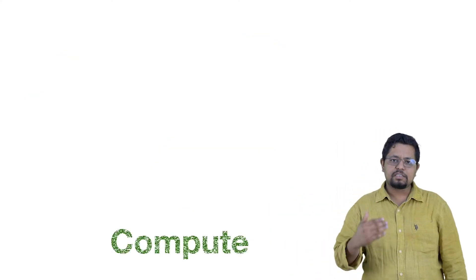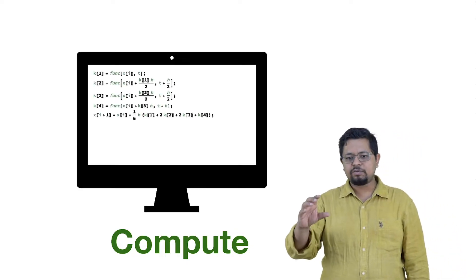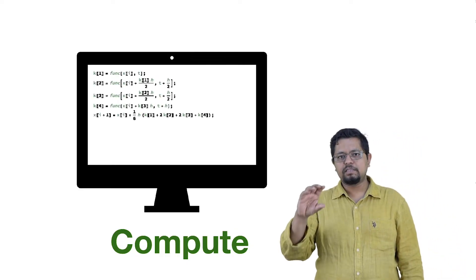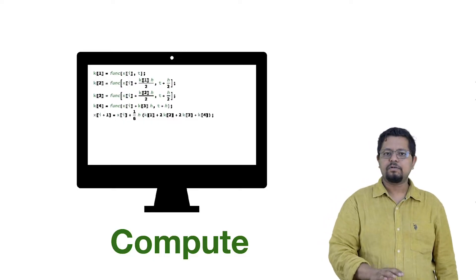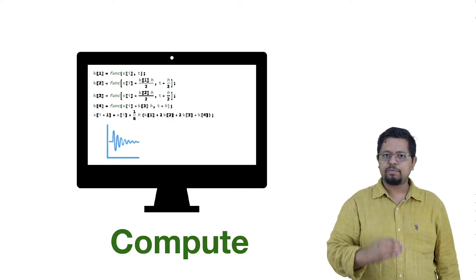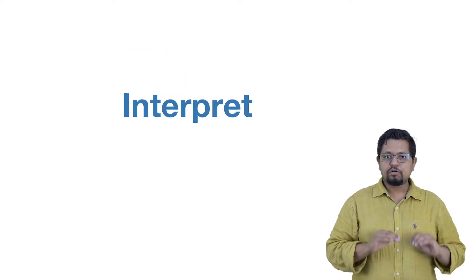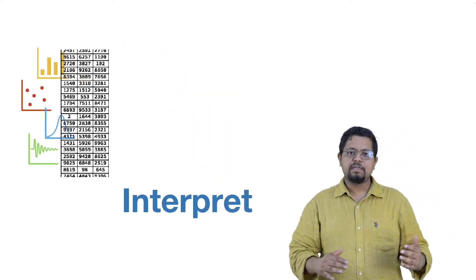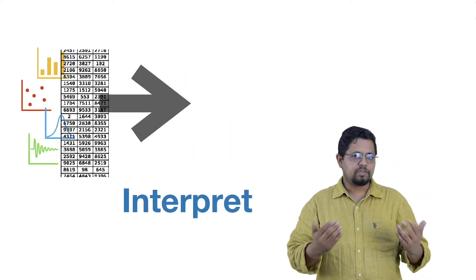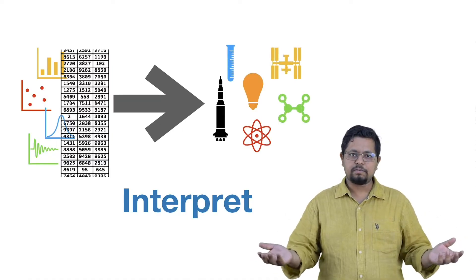The third stage of this process is compute. This is where we actually take the algorithm and execute it on a computer to obtain the results. We can reanalyze the results if required. The fourth stage is interpretation of the results — this could be in the form of visualization, data, or plotting.